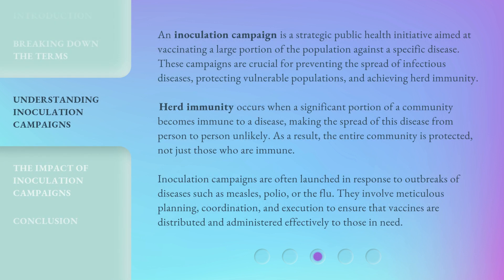An inoculation campaign is a strategic public health initiative aimed at vaccinating a large portion of the population against a specific disease. These campaigns are crucial for preventing the spread of infectious diseases, protecting vulnerable populations, and achieving herd immunity. Herd immunity occurs when a significant portion of a community becomes immune to a disease, making the spread of this disease from person to person unlikely. As a result, the entire community is protected, not just those who are immune.